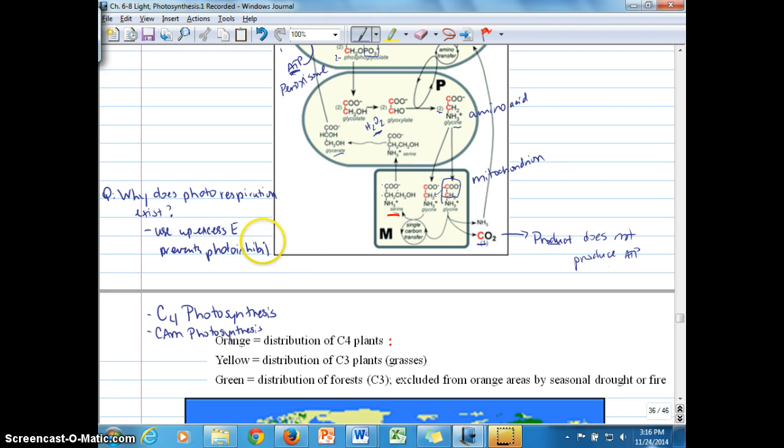even though it's not very effective for using that energy. So C4 and CAM photosynthesis are two pathways that evolved to reduce the amount of photorespiration, which is what we'll be talking about next. Thank you.